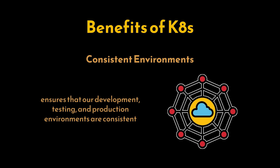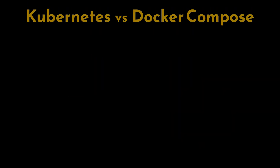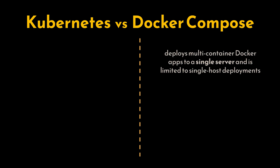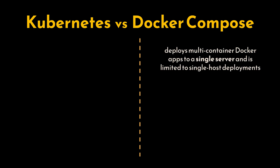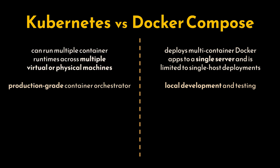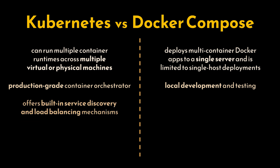Finally, consistent environments: by using Kubernetes we ensure that our development, testing, and production environments are consistent, leading to fewer issues and better development cycles. Now, before delving into the architecture, some of you may be asking: what is the difference between Kubernetes and Docker Compose? Docker Compose deploys multi-container Docker apps to a single server. It is limited to single host deployment and lacks the advanced orchestration capabilities of Kubernetes. It is suitable for local development and testing, but less suitable for production deployment. Kubernetes, on the other hand, is a production-grade container orchestrator that can run multiple container runtimes including Docker across multiple virtual or physical machines.